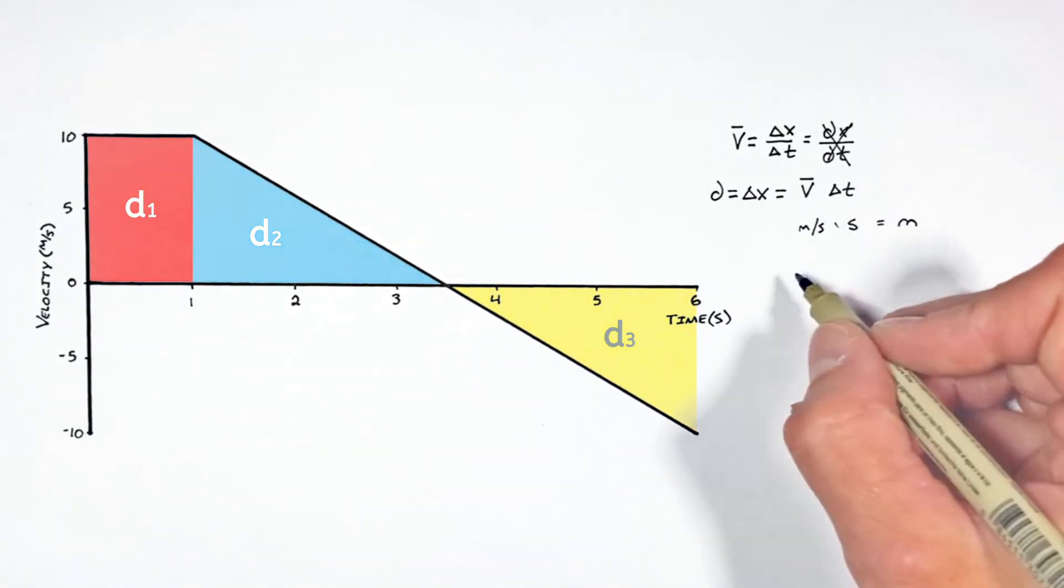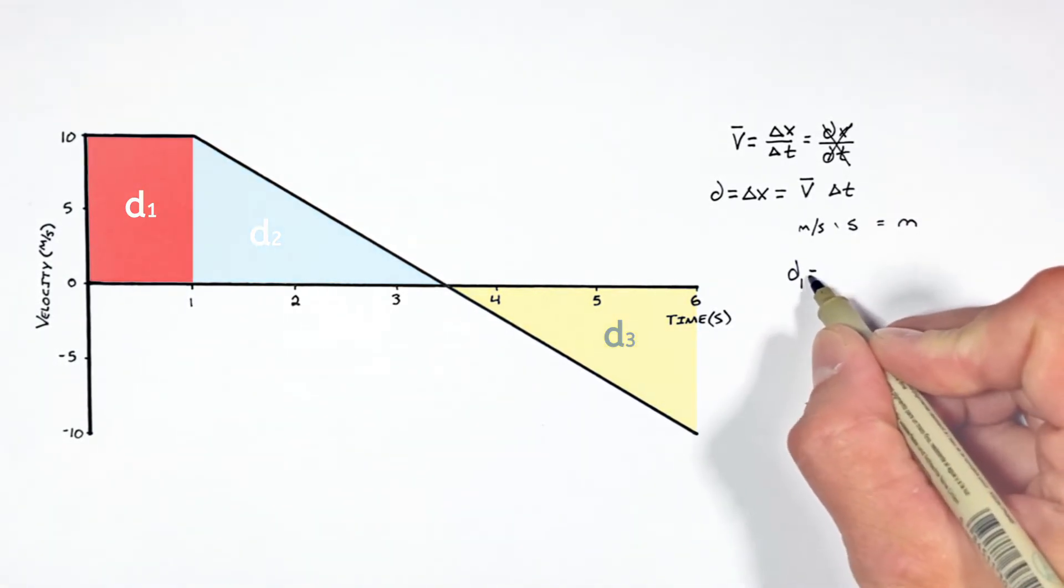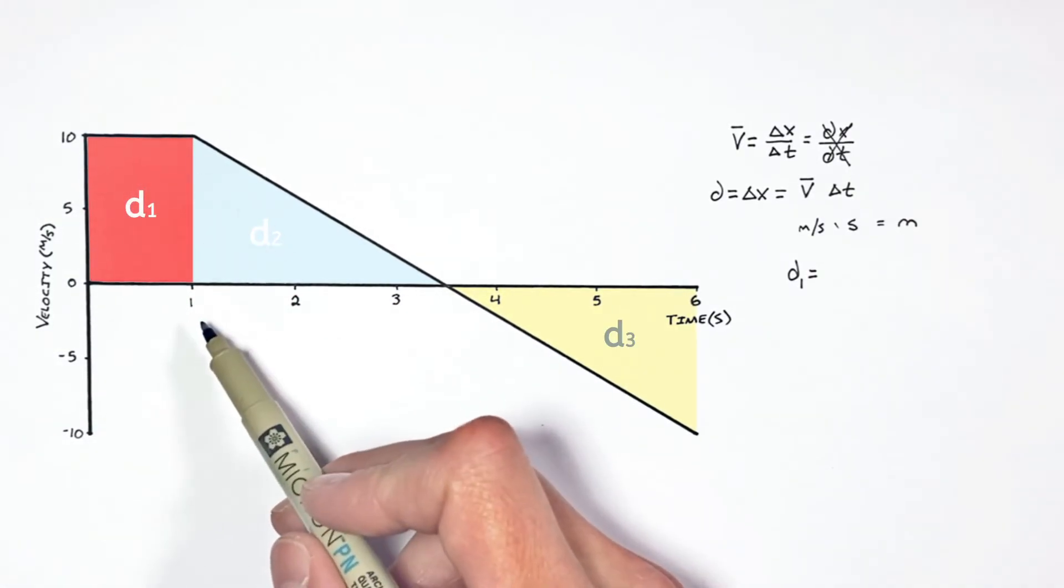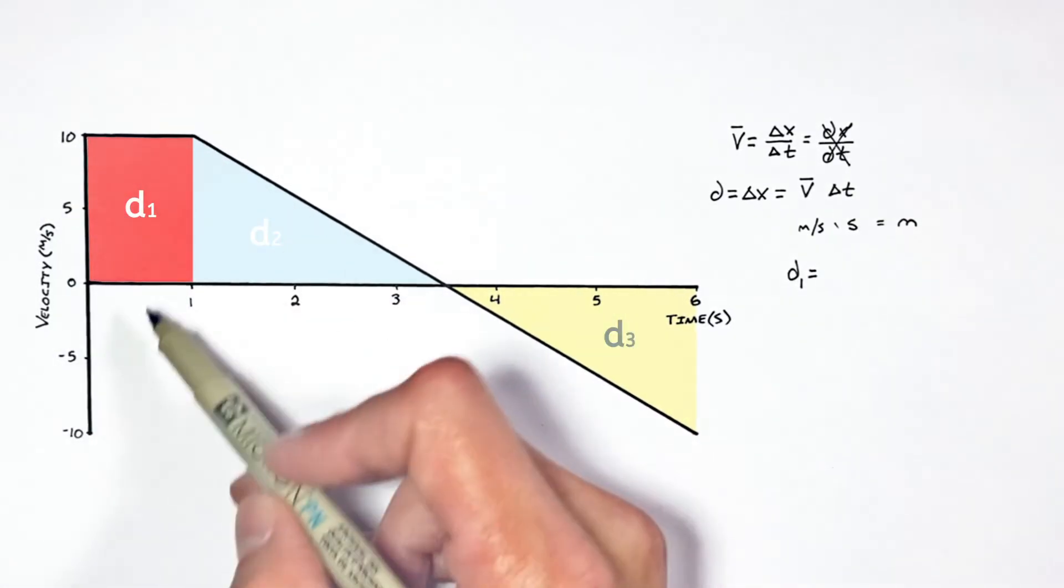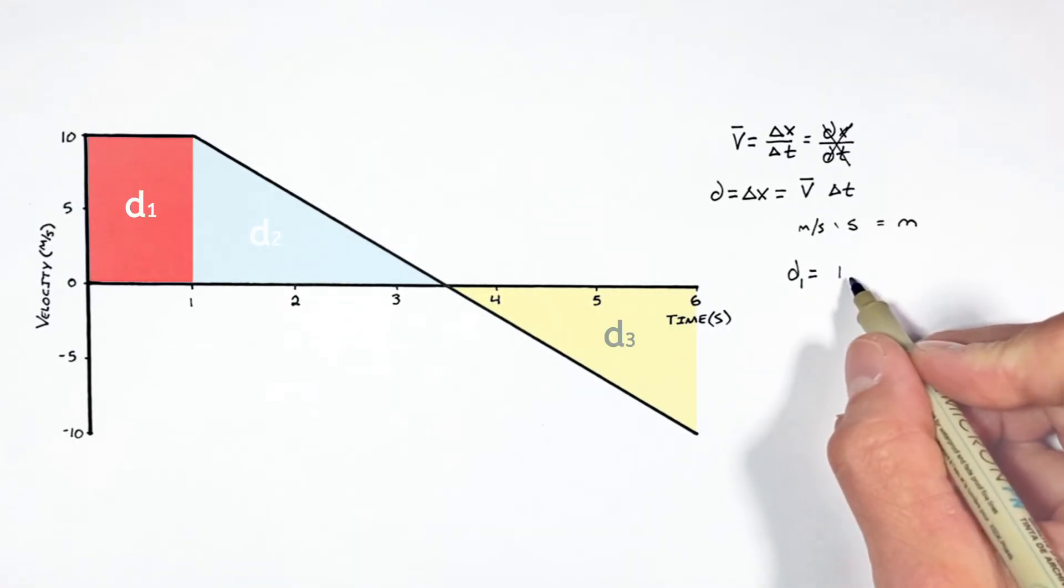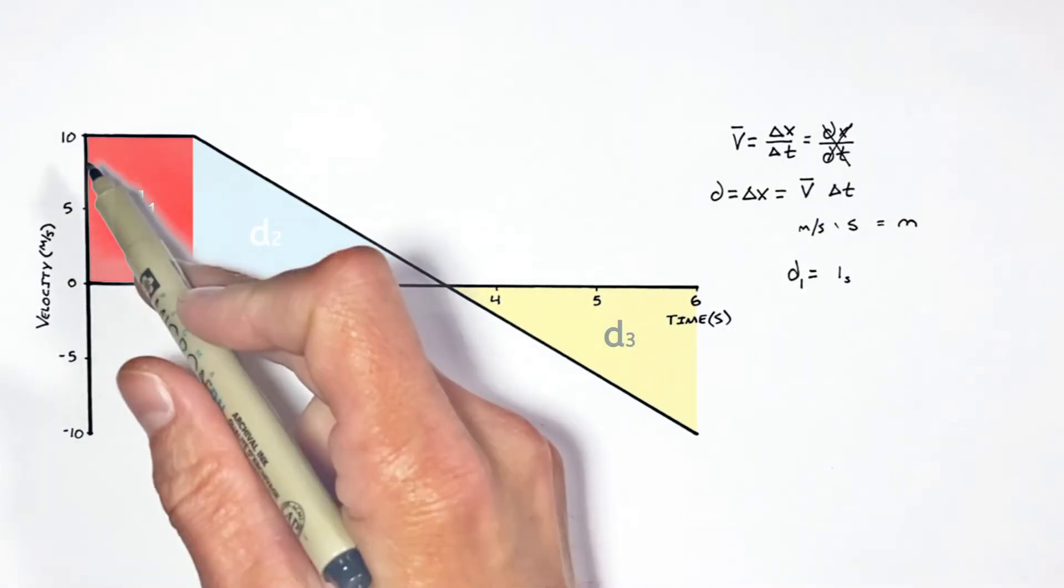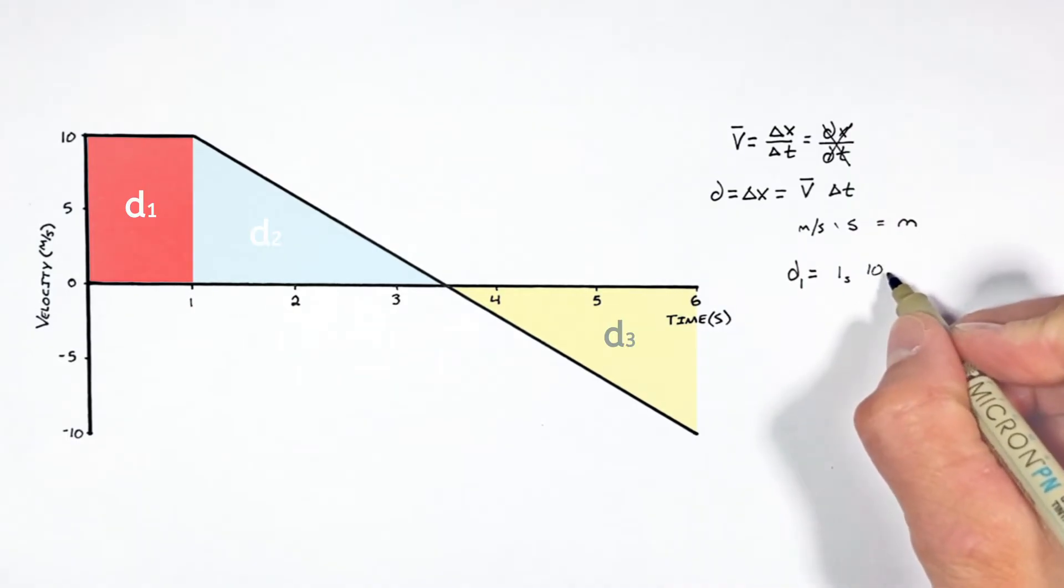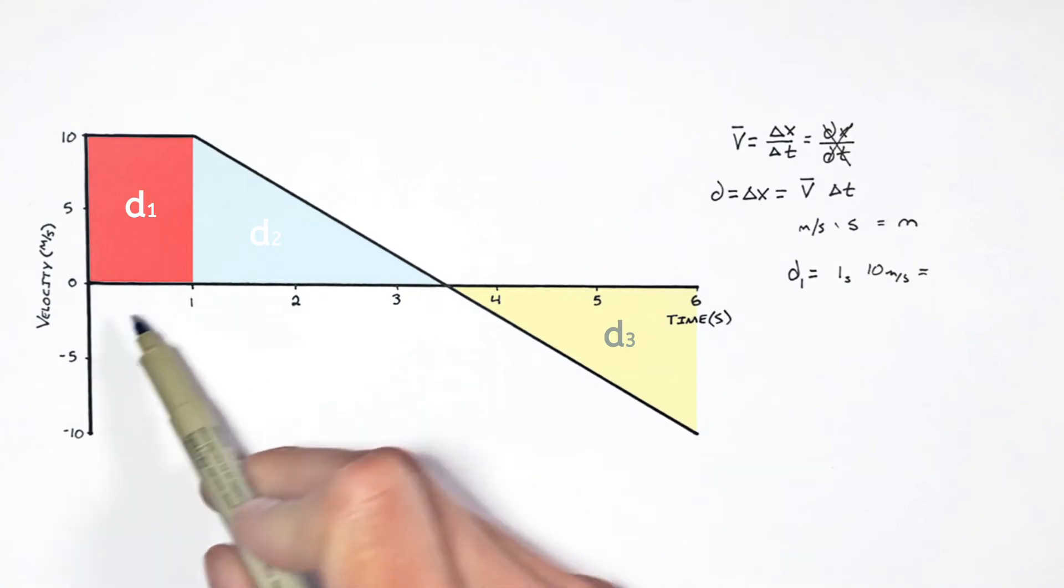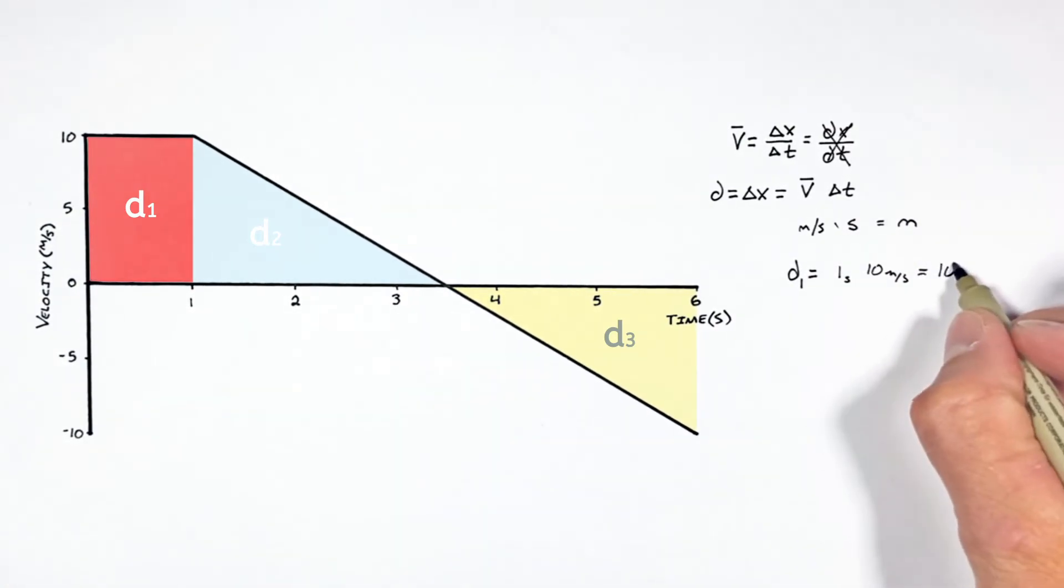You see, in this first phase of motion, I'm going to call that D1, we have an object moving along at 10 meters per second for one second. Well, the area of this rectangle is going to have a base of one, or really one second, and a height of 10 meters per second, leaving us with a displacement over the first second of 10 meters.